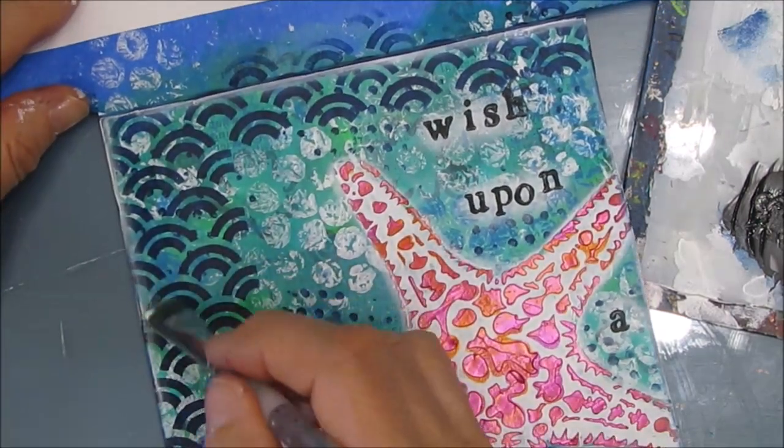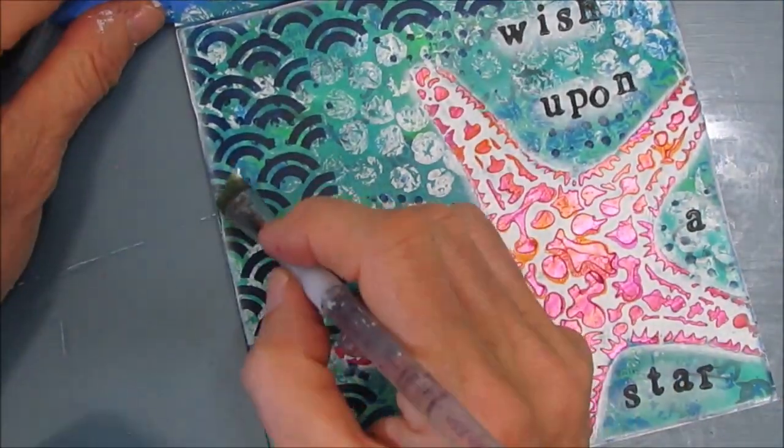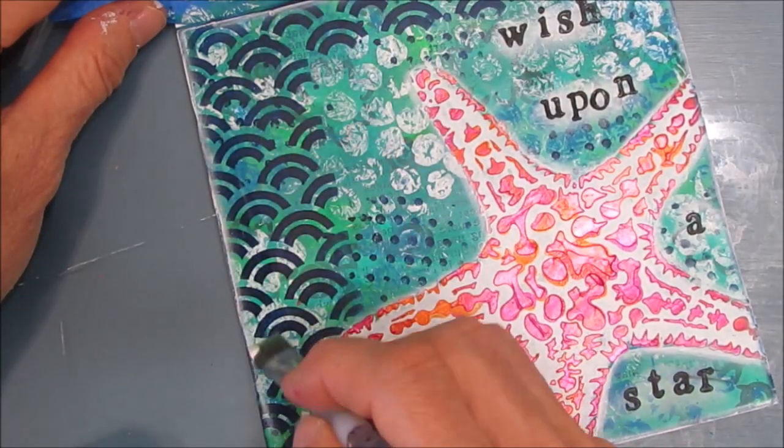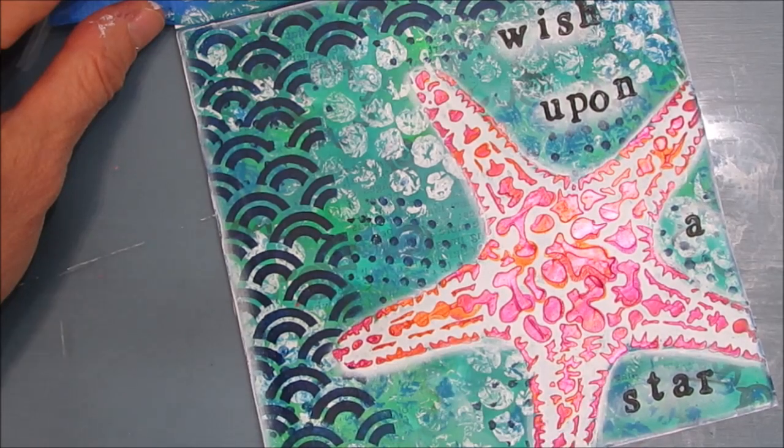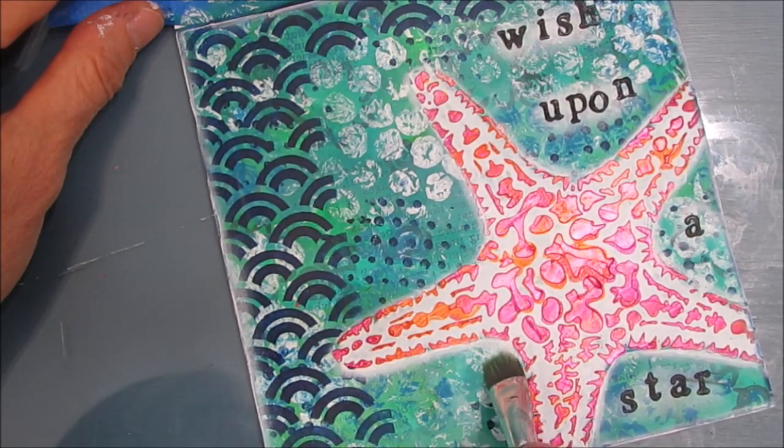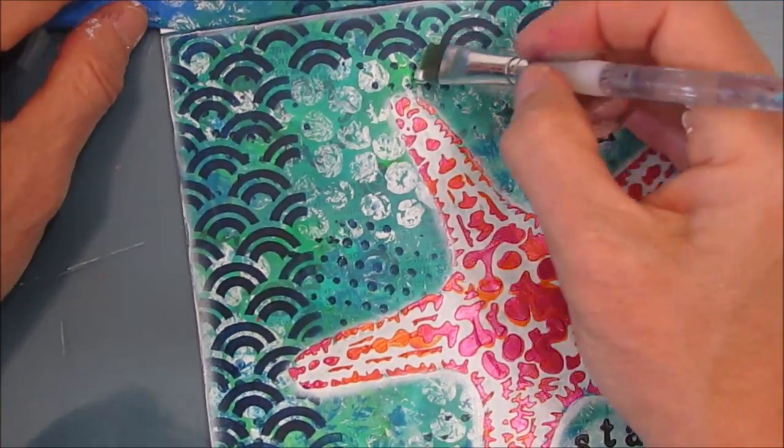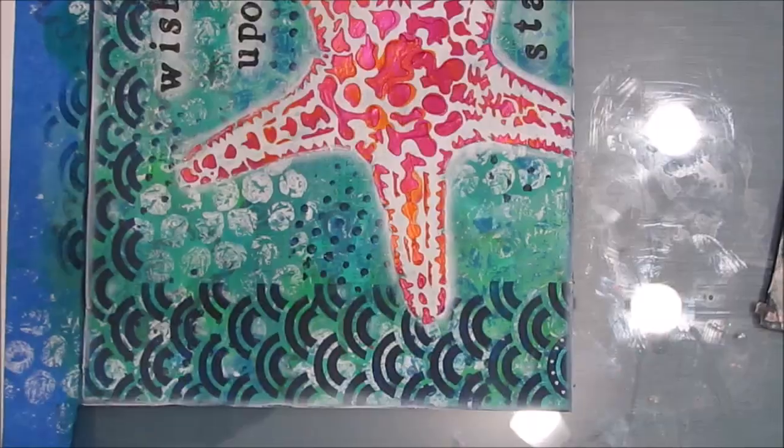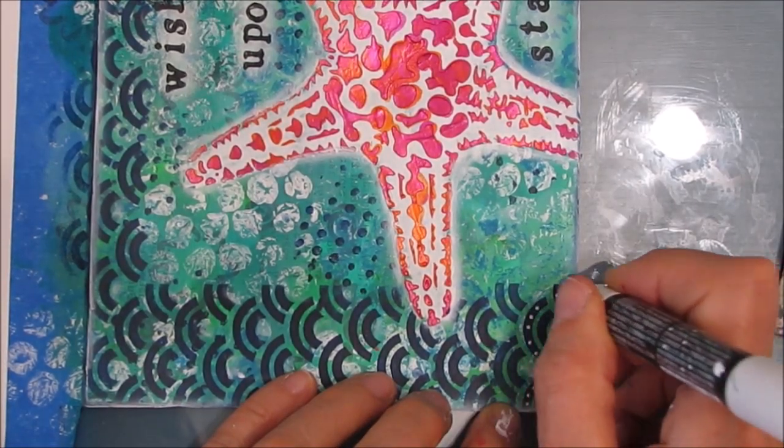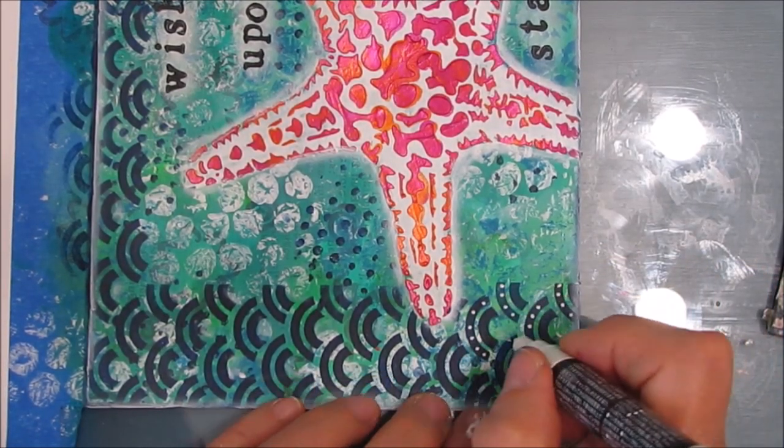If I want it more white, I wait for it to dry and then come back and do another layer. Build it up slowly—it's easy to add more, it's not so easy to take off. The colors you see there are the true colors.